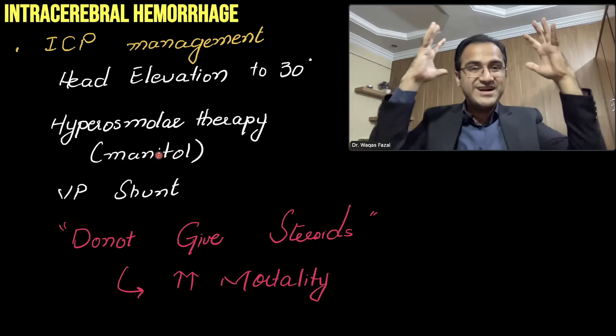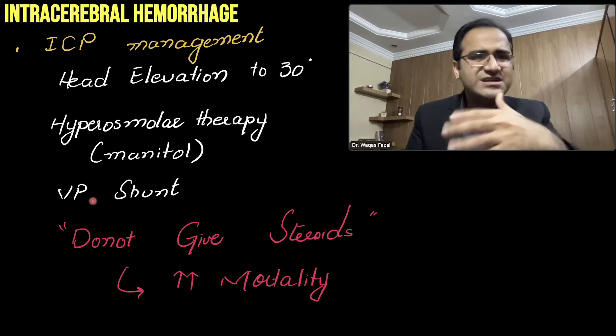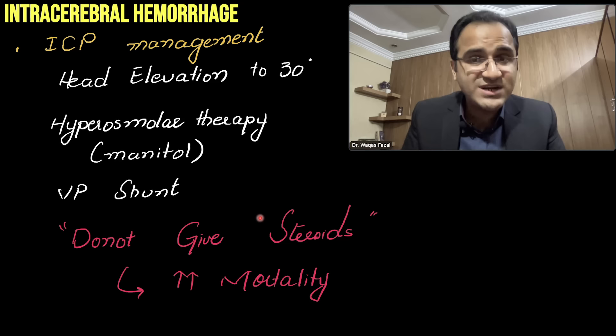A VP shunt neurosurgical intervention can also be performed depending on the patient. Most commonly, head elevation and hyperosmolar therapy are given to these patients.